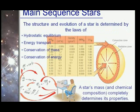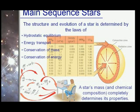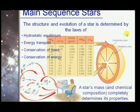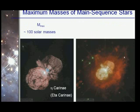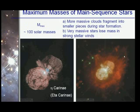The structure and evolution of a star is always determined by the laws of hydrostatic equilibrium, energy transport, conservation of mass, and conservation of energy. Hydrostatic equilibrium is the balance between hydrogen pressure and energy transport from the core to the photosphere or outer surface of stars. These are the main things to consider when studying stellar evolution. Maximum masses of stars are from 50 to 100 solar masses.